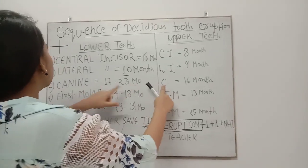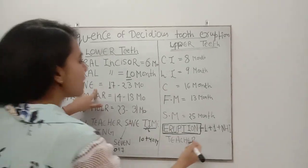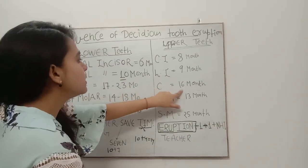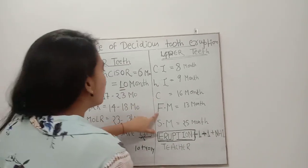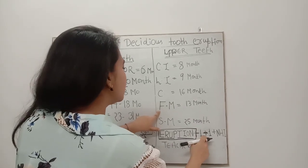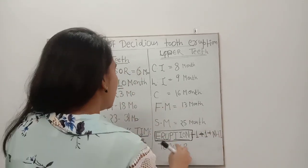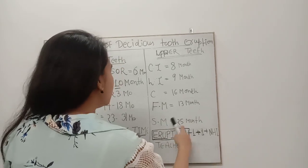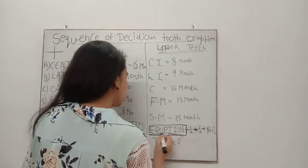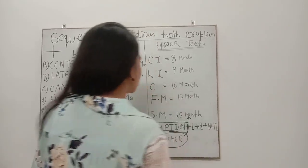For the upper canine: lower canine is 17 months, minus 1 gives 16 months. For the upper first molar: lower first molar is 14 months, minus 1 gives 13 months. For the upper second molar, use the 'Teaching' mnemonic again — this refers to 25 months of age.